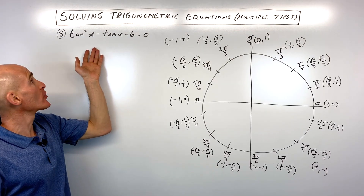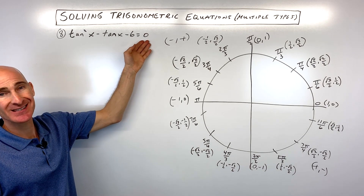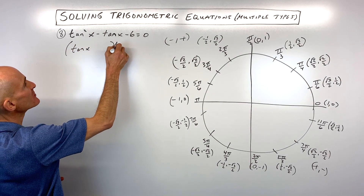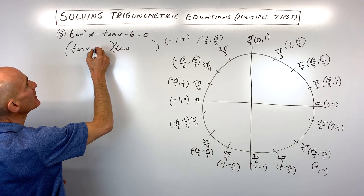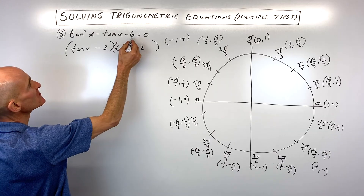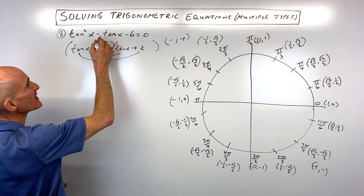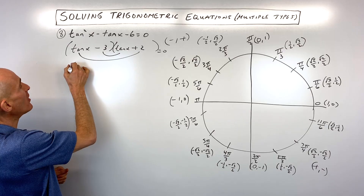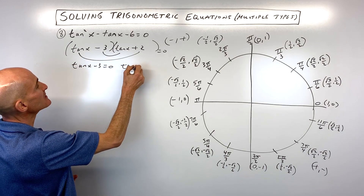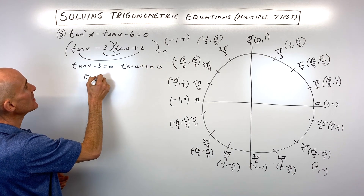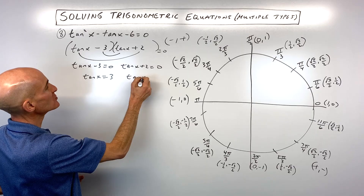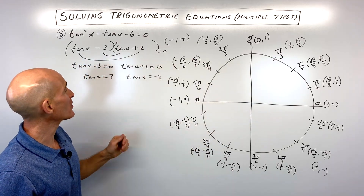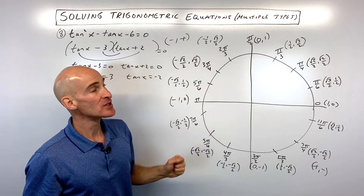Number 8: tan²(x) - tan(x) - 6 = 0. Factoring into two binomials: (tan(x) - 3)(tan(x) + 2) = 0. Setting each factor to zero: tan(x) = 3 and tan(x) = -2. On the unit circle, there are no standard angles where tangent equals 3 or -2, so we need a calculator in radian mode.